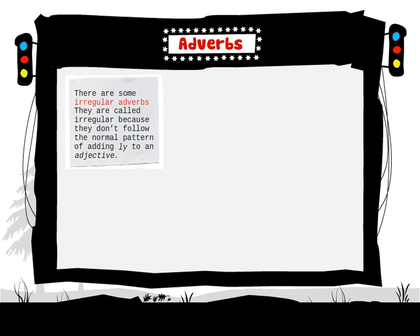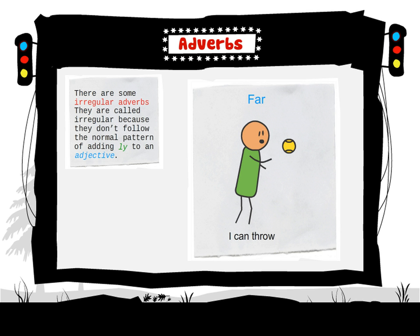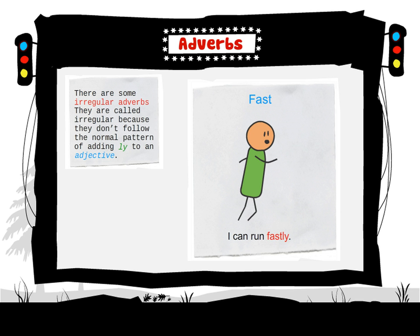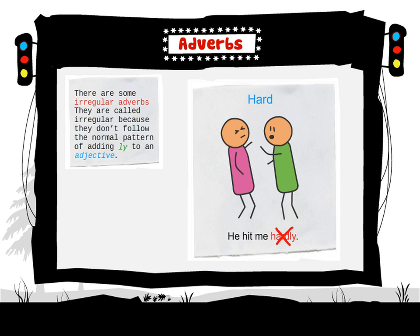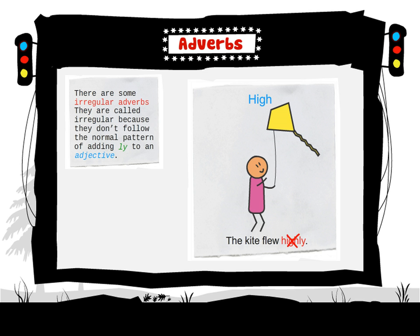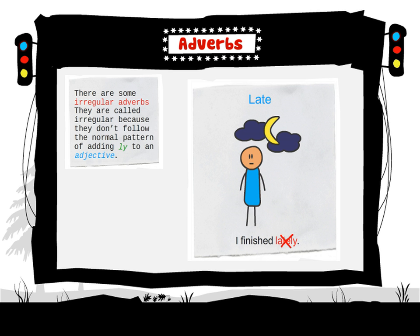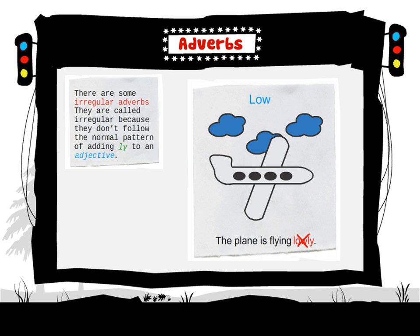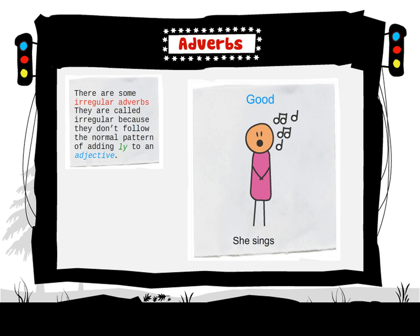There are some irregular adverbs. They are called irregular because they don't follow the normal pattern of adding -ly to an adjective. For example: far — I can throw far; fast — I can run fast; hard — he hit me hard; high — the kite flew high; late — I finished late; low — the plane is flying low; good — she sings well.